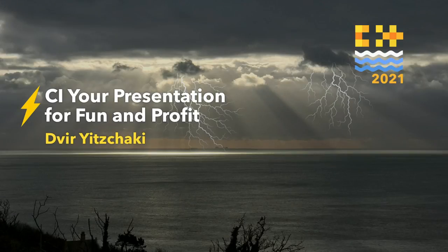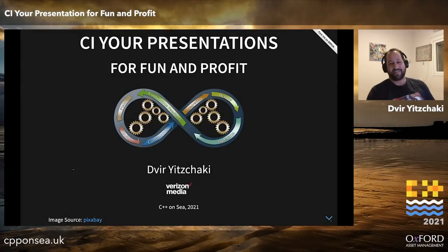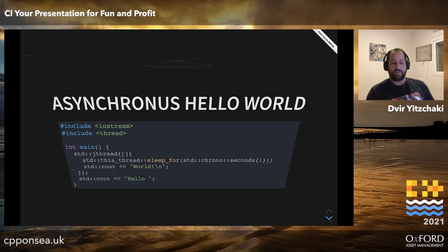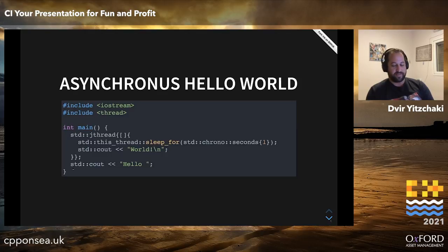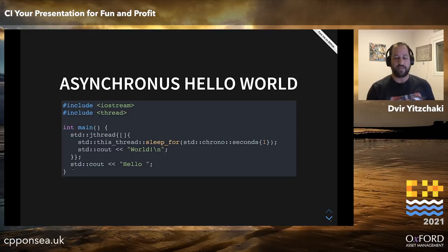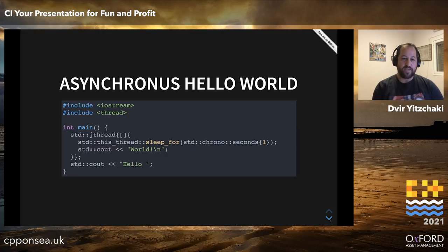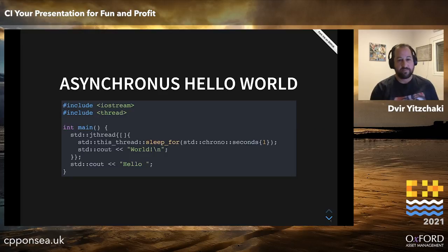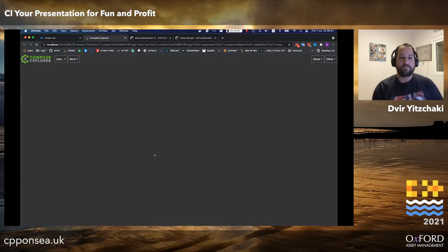Hi everyone. I'll talk about continuous integration for your presentations. I did the concurrency class with Anthony the last two days and I wanted to share this bit of jthread code with you. I have here a jthread which will wait for one second and then print 'world', and then from main I print 'hello', and I expect it to first print 'hello' and then 'world'. So let's try to run it.